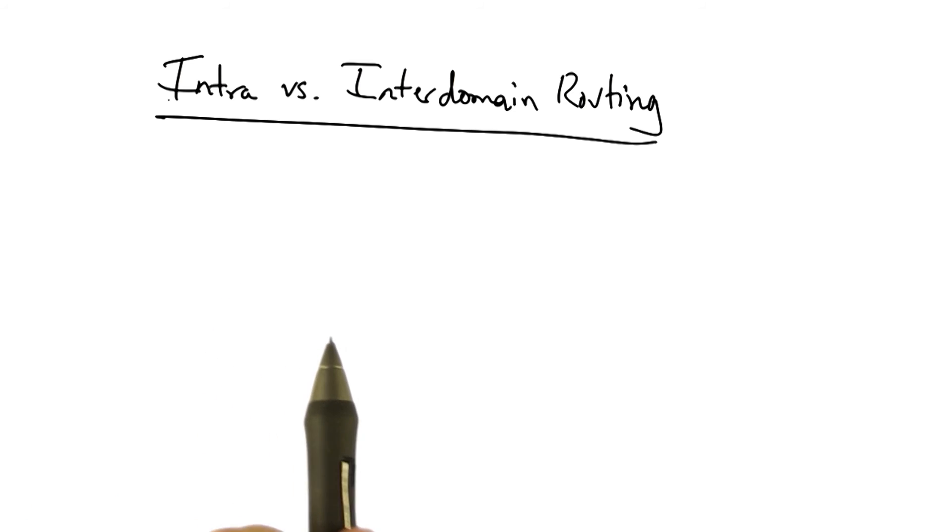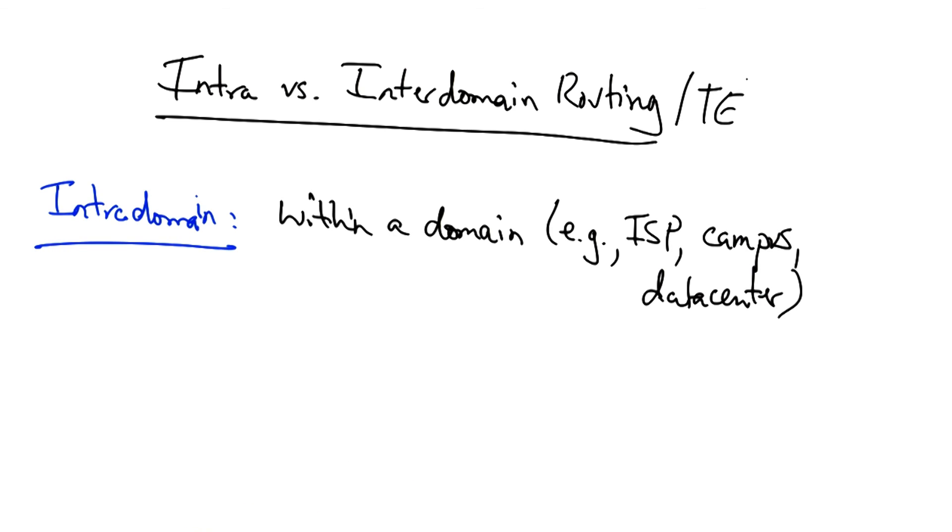This completes our overview of intra-domain routing, and now we will take a look at inter-domain routing. Intra-domain routing and traffic engineering concerns traffic flow within a single domain, such as an ISP, a campus network, or a data center.